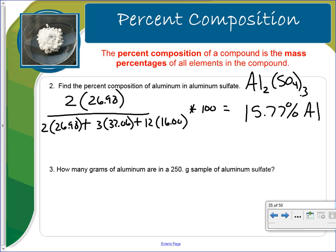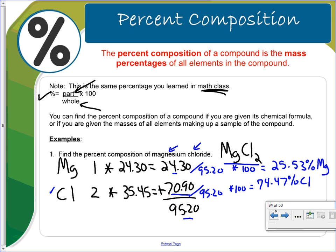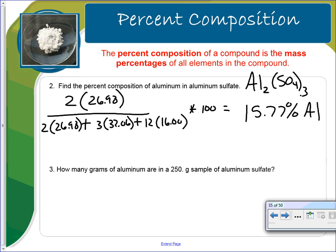You could have worked this the way I worked the previous. You could have figured out aluminum, sulfur, and oxygen and worked it the same way. I'm just showing you different ways you can show percent composition.